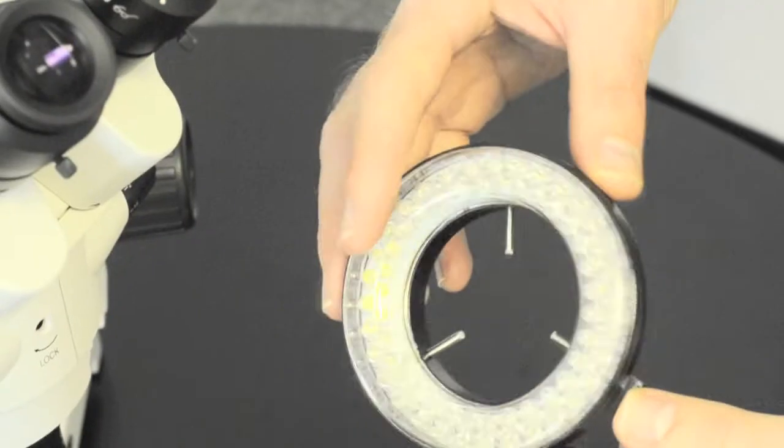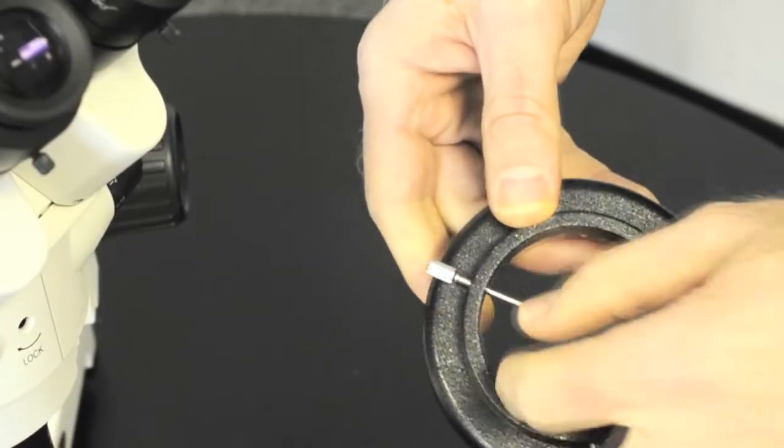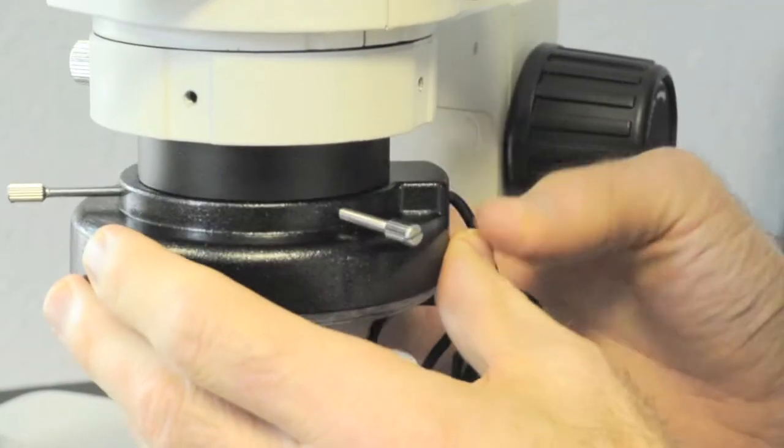There is an available 80 LED ring light which is a great lighting option for many applications. The unit attaches to the microscope head using three integrated thumb screws.